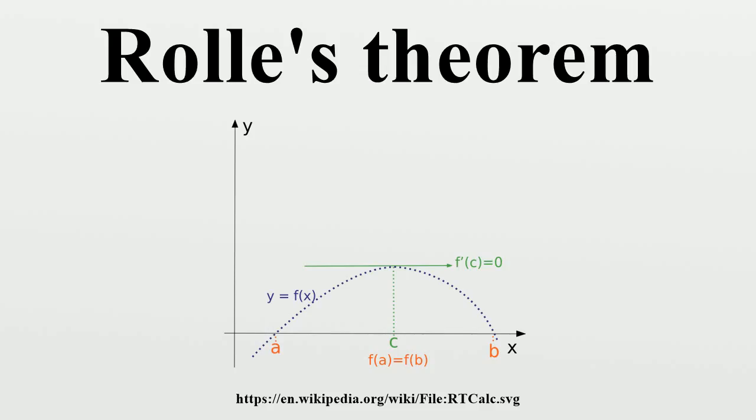Examples: First example, for a radius r greater than zero, consider the function whose graph is the upper semicircle centered at the origin. Since f(-r) equals f(r), Rolle's theorem applies, and indeed there is a point where the derivative of f is zero. Note that the theorem applies even when the function cannot be differentiated at the end points because it only requires the function to be differentiable in the open interval.